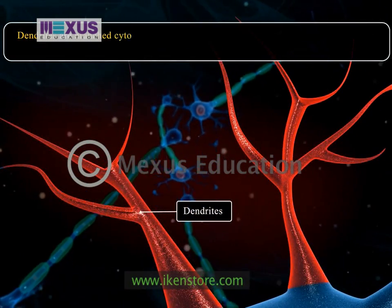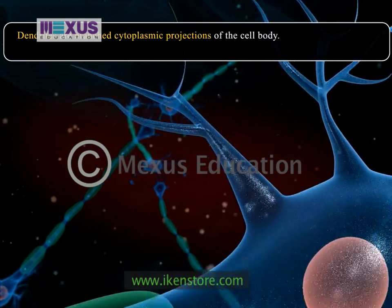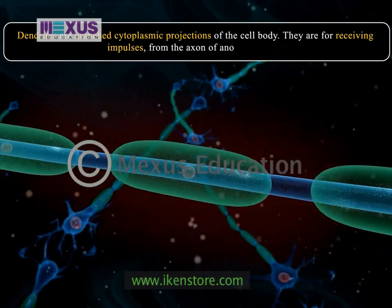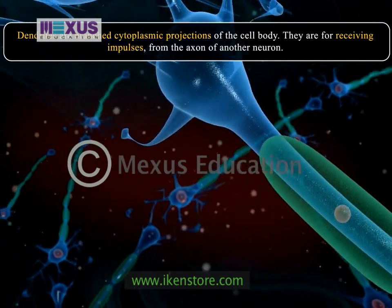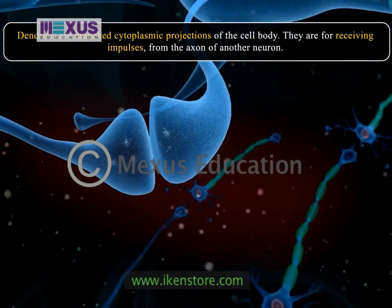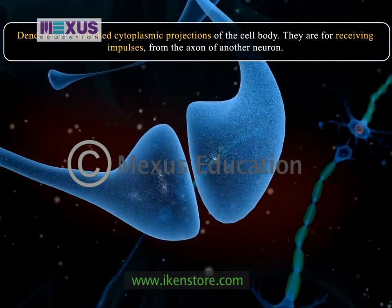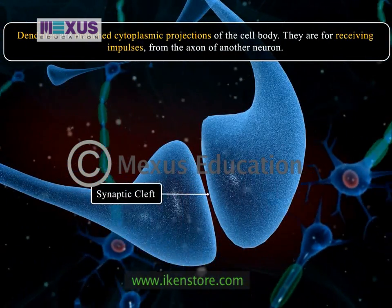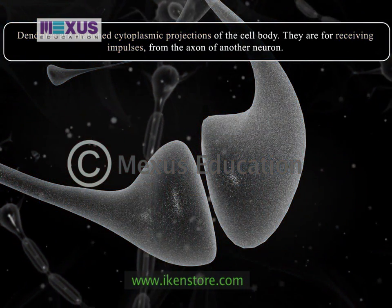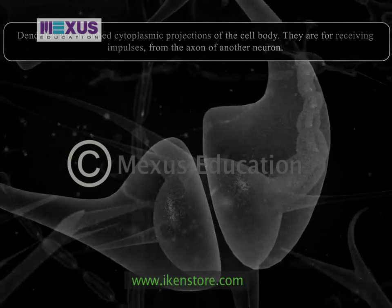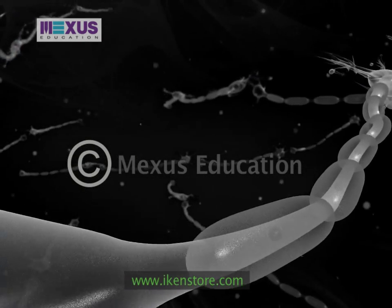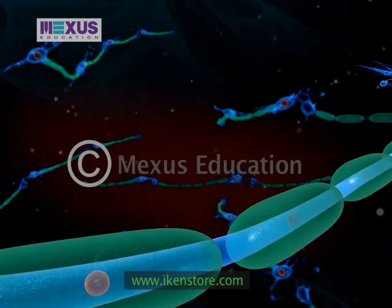Dendrites are branched cytoplasmic projections of the cell body. They are for receiving impulses from the axon of another neuron. The dendrites of one neuron and the axon of another neuron are separated by an extremely narrow space called the synaptic cleft, through which nerve impulses are transmitted.